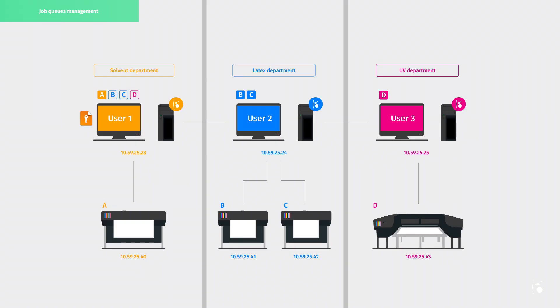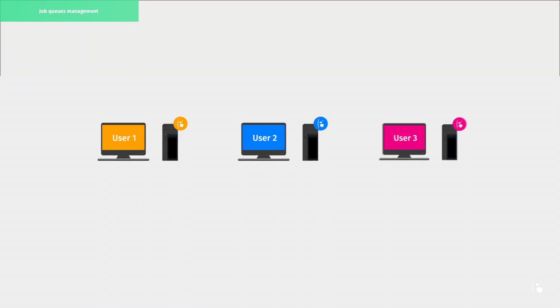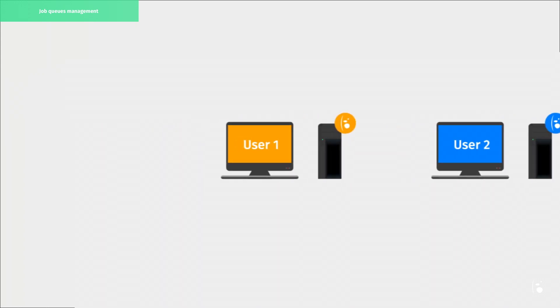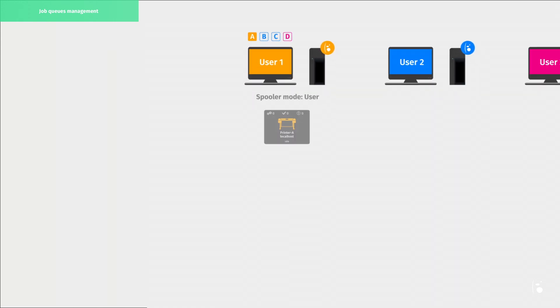Now, if user 1 prints a job on printer A, user 3 will be able to display the processing job next to the remote printer. Based on each spooler's settings, let's recap who can manage what job queues. User 1 can drive all printers, so basically he or she can manage all company spoolers, even if their spooler is set in user mode.